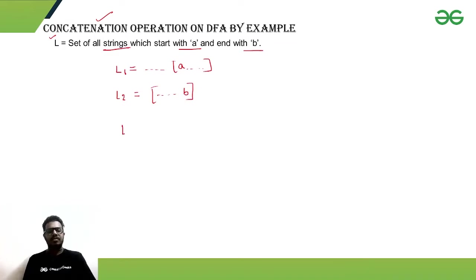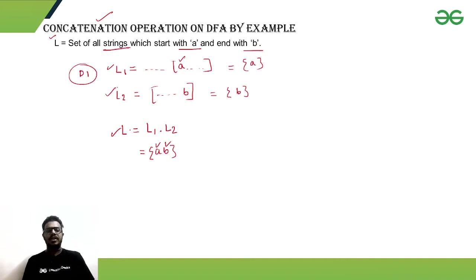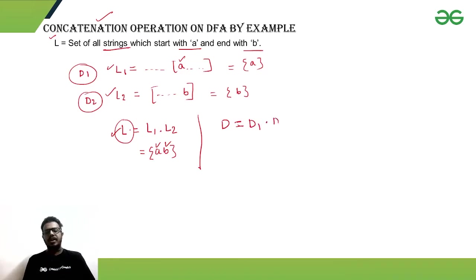Our language L is the concatenation of L1 and L2, meaning all strings from L1 are concatenated with all strings of L2. The smallest string of L1 is A and the smallest string of L2 is B, so the smallest string of L is AB. For language L1 we have DFA D1, and for language L2 we have DFA D2, and the DFA for L is the concatenation of D1 and D2.